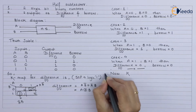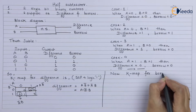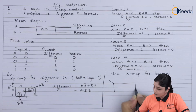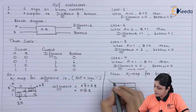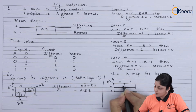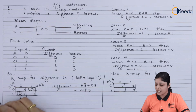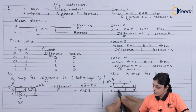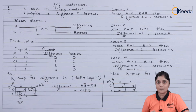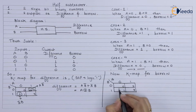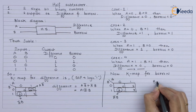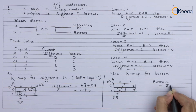Now the K-map for borrow: it is also a two-variable K-map with A and B. You mark the logic 1s since we are considering SOP expressions. Grouping is not possible so we take the individual term, and the equation for borrow is A-bar·B.